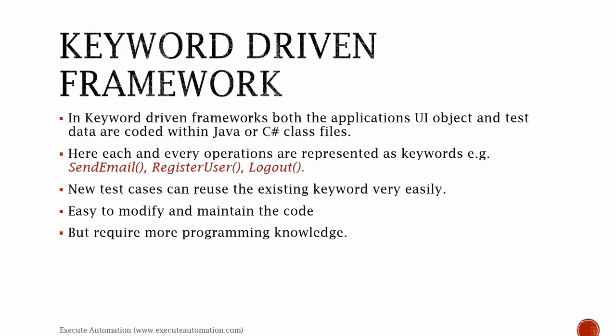In keyword-driven frameworks, both the application's UI objects and test data are coded within Java or C# class files, meaning the test data is hardcoded along with the UI. Most functionalities are written as methods in C# and Java class files, where each operation is represented as a keyword — for example, send email, register user, logout. New test cases can reuse existing keywords very easily. It is easy to modify and maintain the code, but it requires more programming knowledge, and if data increases it becomes an overhead.